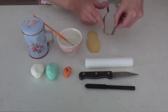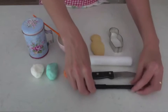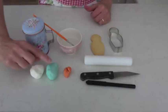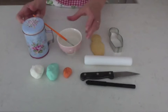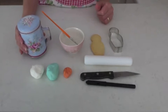You'll need the cutter, a small rolling pin, a sharp knife, an edible pen, white fondant, blue fondant and orange fondant, water and a brush, and some cornflour or cornstarch.